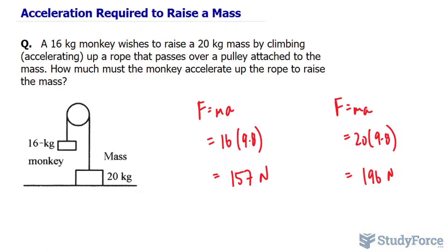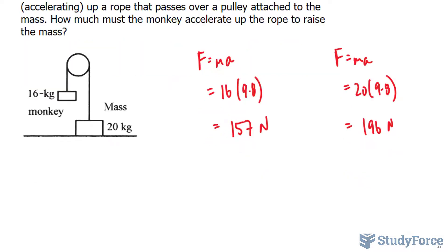The next thing that I'll do is find the difference between these two tensions. Because if I find the difference between them, I can then find the extra acceleration that the monkey needs to exert in order for them to balance. So let's subtract 196 and 157, 196 minus 157 makes 39 newtons.